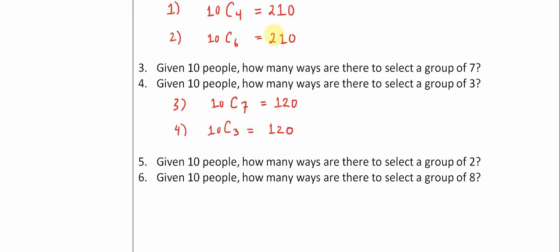Okay, hopefully you see a bit of a pattern emerging here. Number five, 10 choose 2, is equal to 45, and then number six, 10 choose 8, is equal to 45.